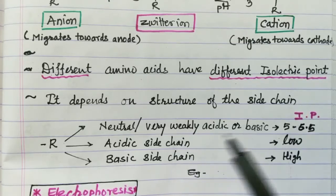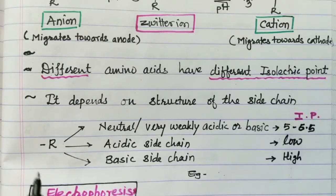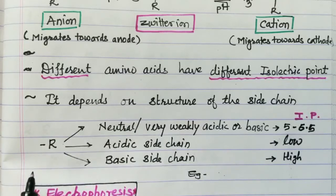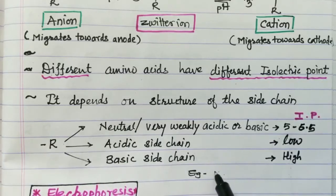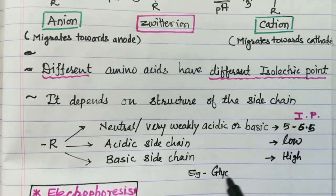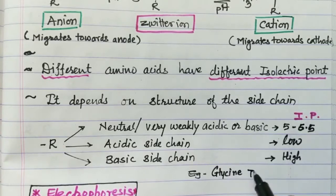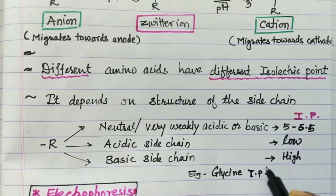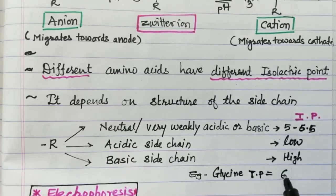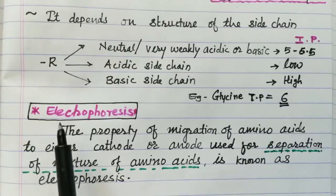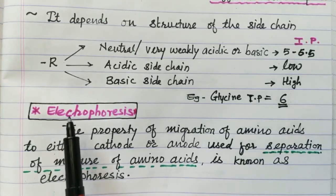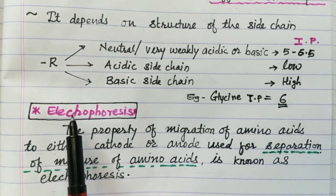If you have a basic side chain, the pH is high so the isoelectric point is also high — definitely more than 7. For example, glycine has an isoelectric point at pH 6. This migration of amino acids depending on the pH value of the medium can be used in the electrophoresis technique.